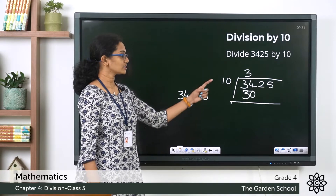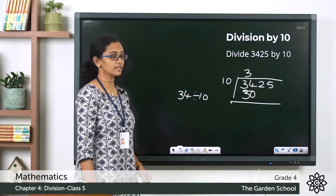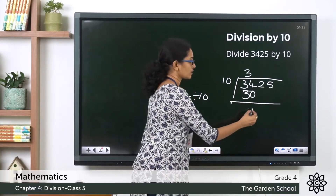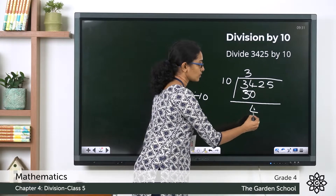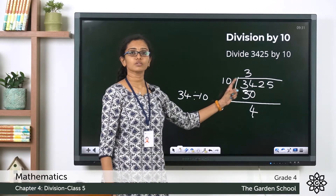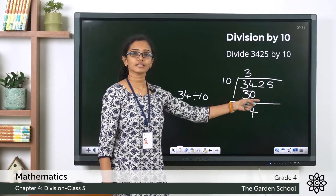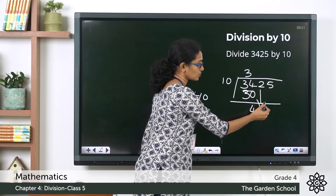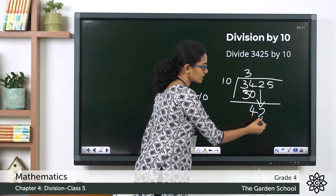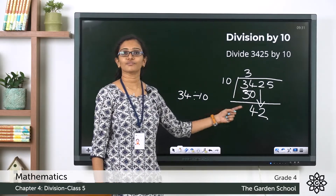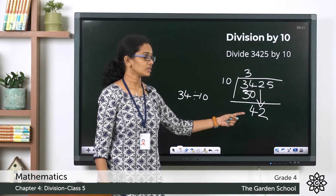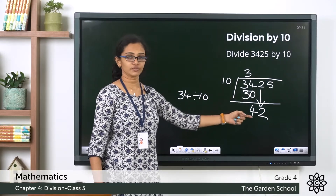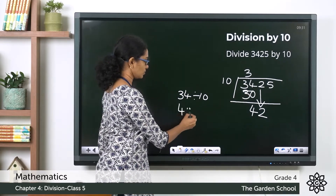The next step is to subtract these two numbers: 34 minus 30 is 4. Now the next step is to bring down the next digit. The next digit is 2, so we bring it down and here we get 42.